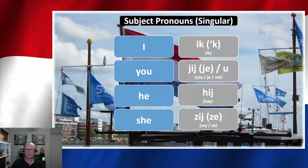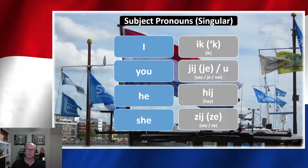In Dutch they have very much the same equivalents. For 'I' it's ik. For 'you' there are a few different ways to say it: jij, which is most common, and u, which is used in a more formal setting. He is hij, she is ze or zij. Ze is the one that tripped me up because it's also used for another pronoun, which we'll talk about on the next slide.